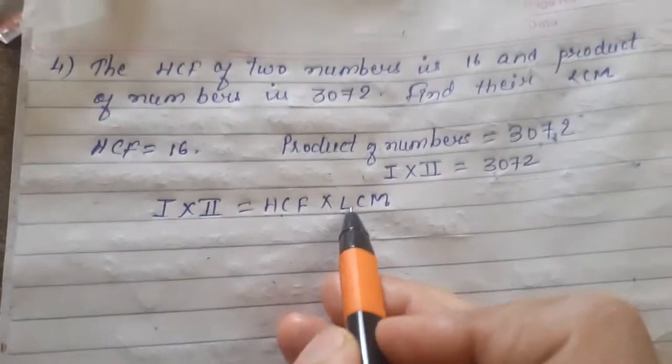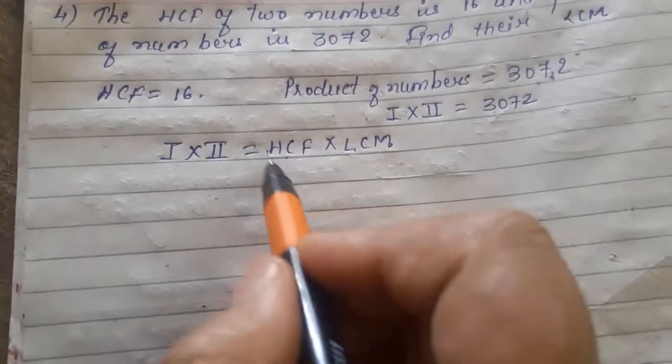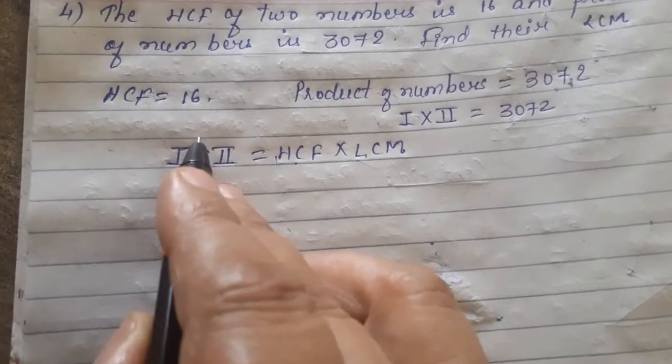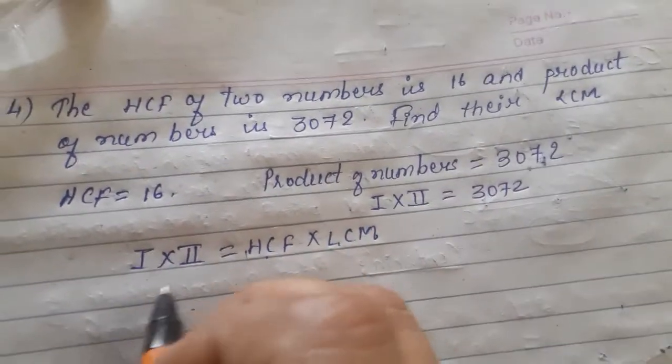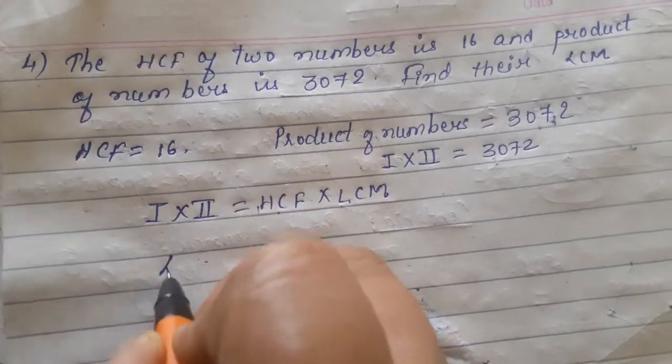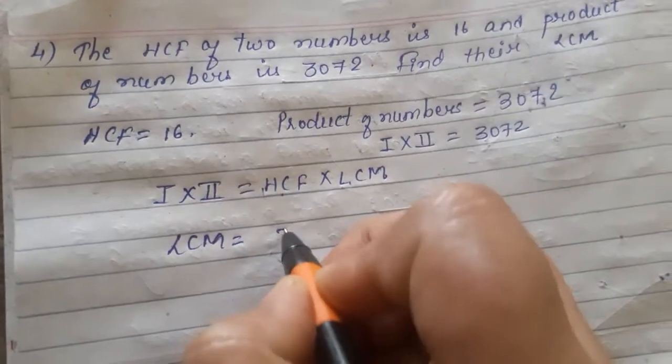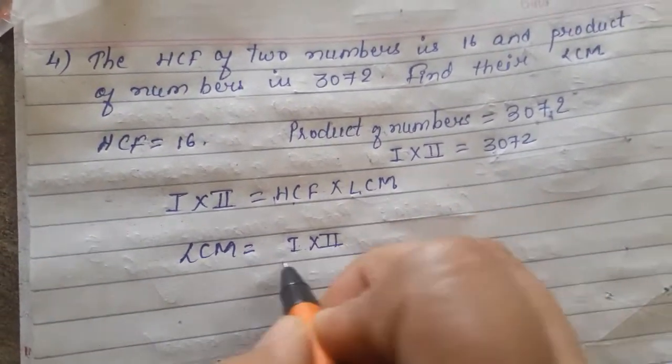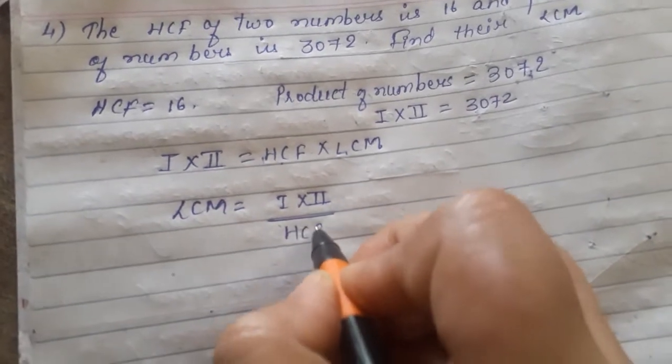So we have to find LCM. Whatever value is given, we divide the product of numbers. So suppose I want to find out the value of LCM. It will be first number multiplied by second number upon HCF.